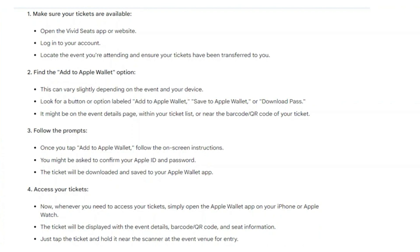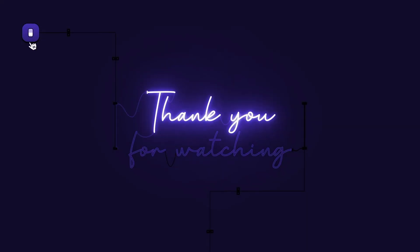Whenever you need to access your tickets, simply open the Apple Wallet application on your iPhone or Apple Watch. The ticket will be displayed with the event details, barcode or QR code, and seat information. Just tap the ticket and hold it near the scanner at the event venue for entry. That's basically how you can add Vivid Seats tickets to Apple Wallet — thanks for watching!